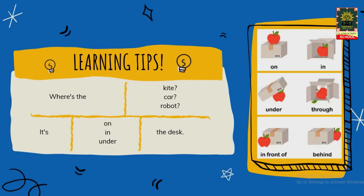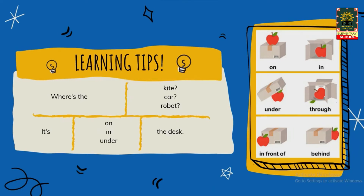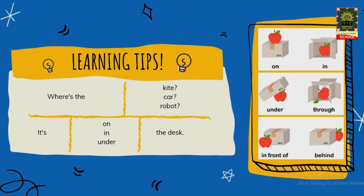Where's the kite? Where's the car? Where's the robot? Tiga pertanyaan tadi adalah menanyakan di mana letak benda. Dan jawaban yang kita gunakan adalah: It's on the desk. It's in the desk. It's under the desk.